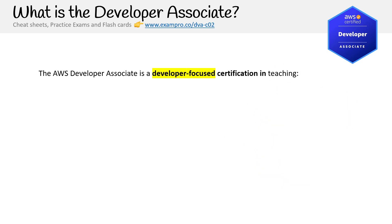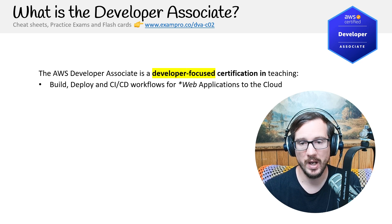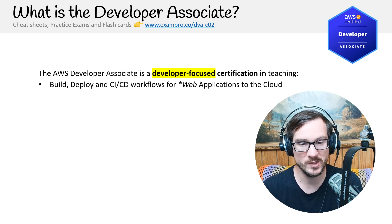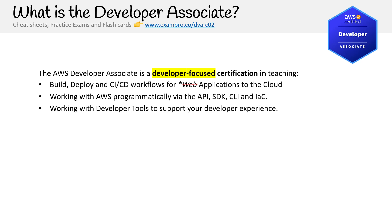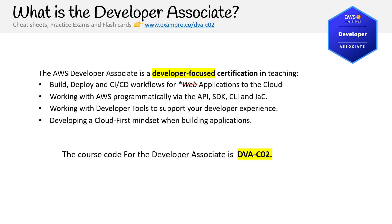It's a developer-focused certification teaching you to build servers, deploy servers, and CI/CD workflows for web applications — or really any kind of application — to the cloud. You will be working with AWS programmatically: APIs, SDKs, CLI, and IaC. We will be focused on developer tools in the AWS ecosystem to improve your developer experience, and the goal is to develop a cloud-first mindset when building applications. The course code for this certification is DVA-C02.